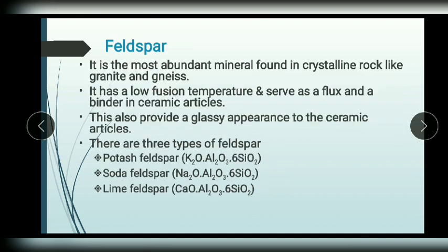The second important raw material is feldspar. It acts as a flux and a binder in ceramic articles and gives a glassy appearance to ceramics. Feldspar is found in crystalline rocks like granite and gneiss. The important types of feldspar are potash feldspar, soda feldspar, and lime feldspar.